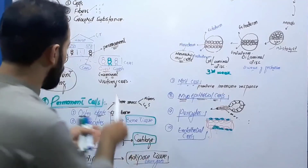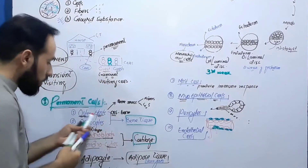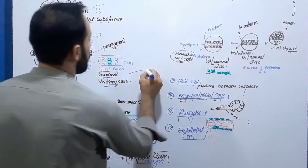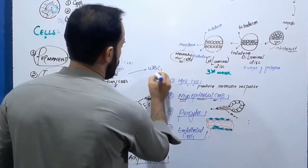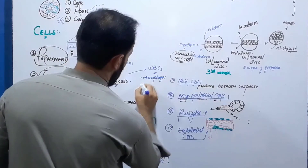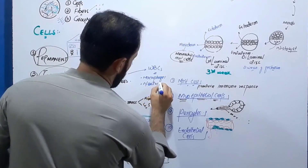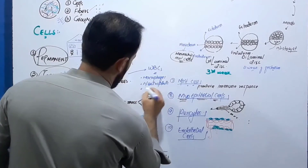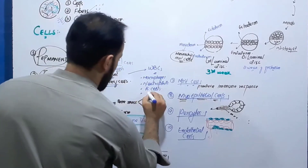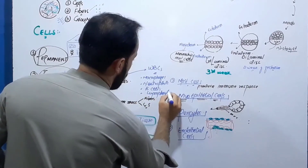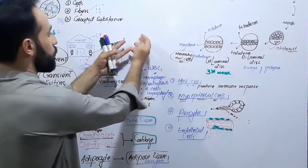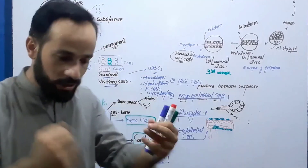There are also certain cells which come into the connective tissue and then leave — these are called transient cells, visiting cells, or guest cells of the connective tissue. They include white blood cells such as macrophages, neutrophils, B cells, and lymphocytes. These visiting cells enter the connective tissue, perform their function, and then come out or die there.